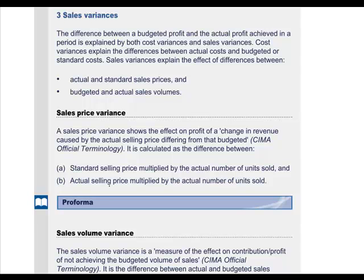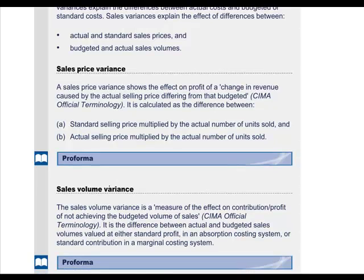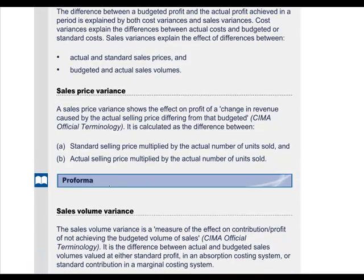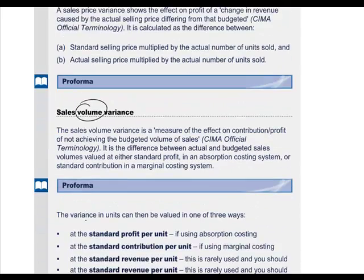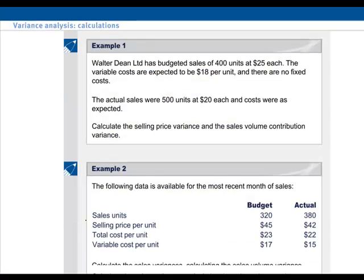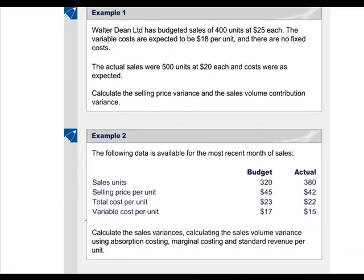Let's start with sales variances. The best way to get into the subject is to look at examples of the two sub-variances that make up our sales variance: the sales price variance and the sales volume variance. Let's take a specific example, and then one can revise by going back to the definitions and confirming how each variance is defined and structured.